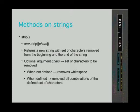The next method is the strip method. The strip method returns a new string with a set of characters removed from the beginning and the end of the string. It takes one optional argument where we can define the characters we want removed. If we don't define this argument, the program assumes we want it to remove white space — so space, tabulator, and newline.